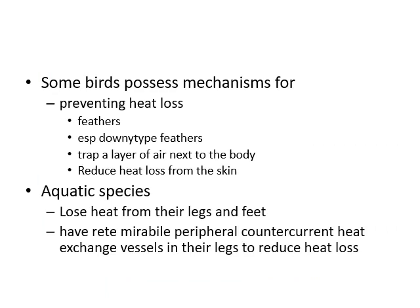Some birds possess mechanisms for preventing heat loss through feathers, especially down feathers — very small feathers that cover newborn chicks. When you observe a chick, it doesn't have large feathers but is covered with small down feathers — like the yellow-colored chicks from your childhood. These feathers trap a layer of air next to the body and reduce heat loss, similar to wearing a sweater in winter, which prevents heat loss by blocking air passageways.